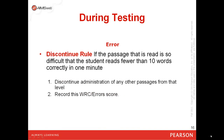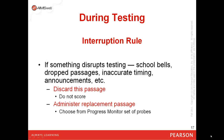If a passage is so difficult that the student reads fewer than ten words correctly in one minute, you can discontinue administration of any other passages from that level and simply record that score. Lastly, if there's an interruption that disrupts testing — such as school bells, dropped passages, inaccurate timing, coughing, sneezing, or fire drills — you can discard that passage and administer a replacement passage via paper and pencil, choosing from the progress monitor set of probes.